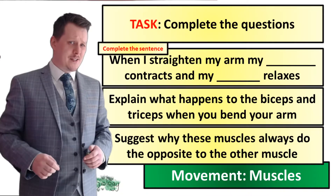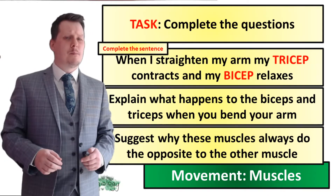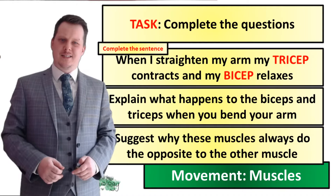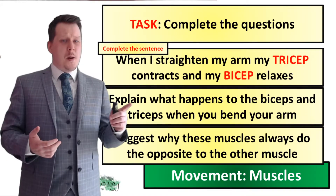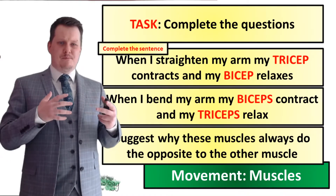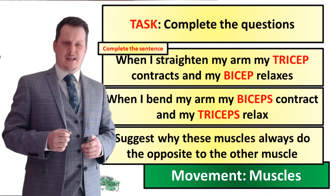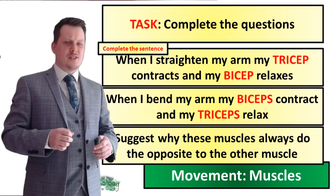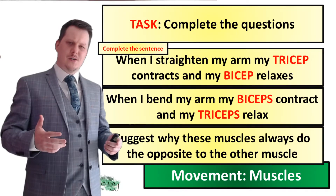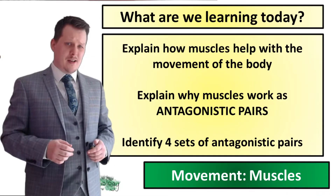When I straighten my arm my tricep contracts and my bicep relaxes. When you bend your arm it is the biceps that contract and the triceps that relax. Why do these muscles do the opposite to each other? Well, that's what we're going to look at next.